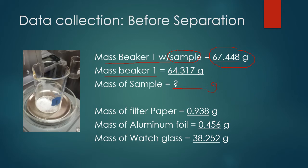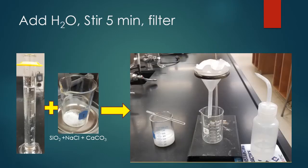Next, we're going to take beaker one that contains the silicon dioxide, sodium chloride, and calcium carbonate mixture, and we're going to add 50 milliliters of deionized water to it. You can see in the picture to the left, there is a graduated cylinder with 50 milliliters of water. At this step, we add the water to the beaker with the solid in it and stir.